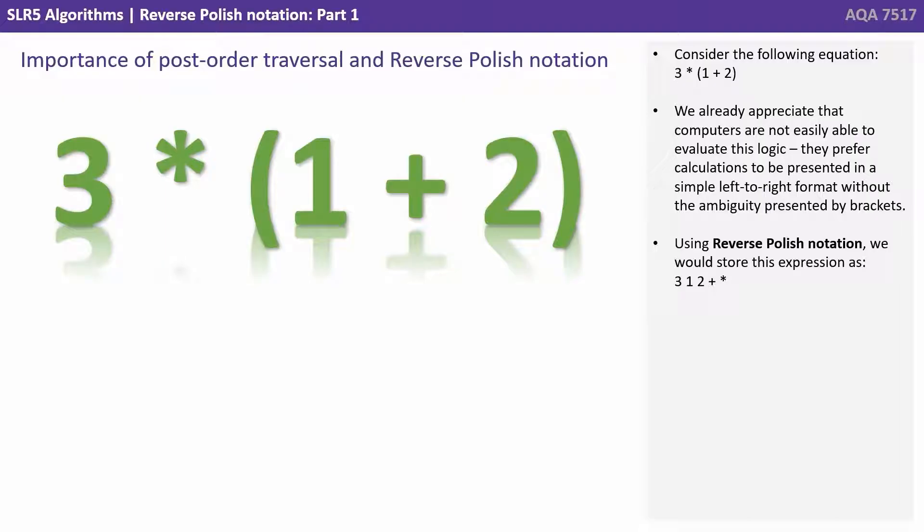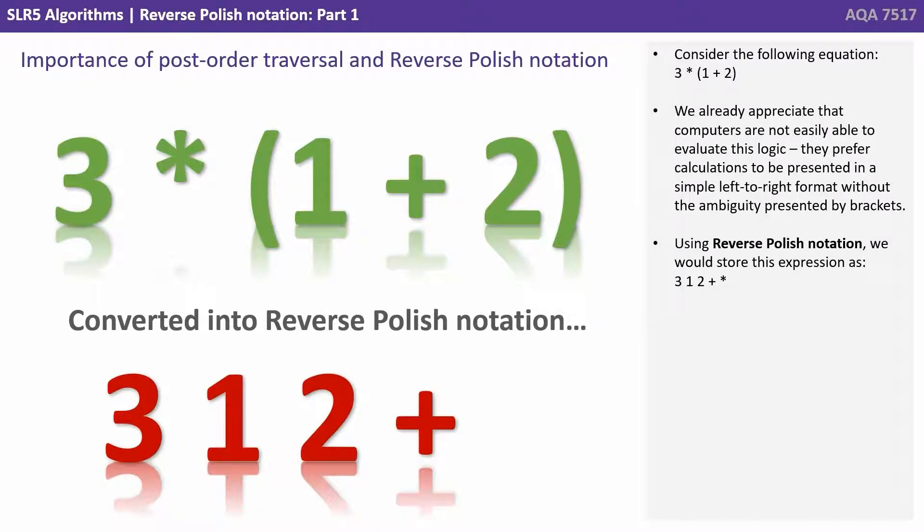Consider the following equation 3 times 1 plus 2. We already appreciate that computers are not easily able to evaluate this logic. They prefer calculations to be presented in a simple left to right format without the ambiguity presented by brackets. Using reverse Polish notation, we would store this expression as 3, 1, 2, plus, times.